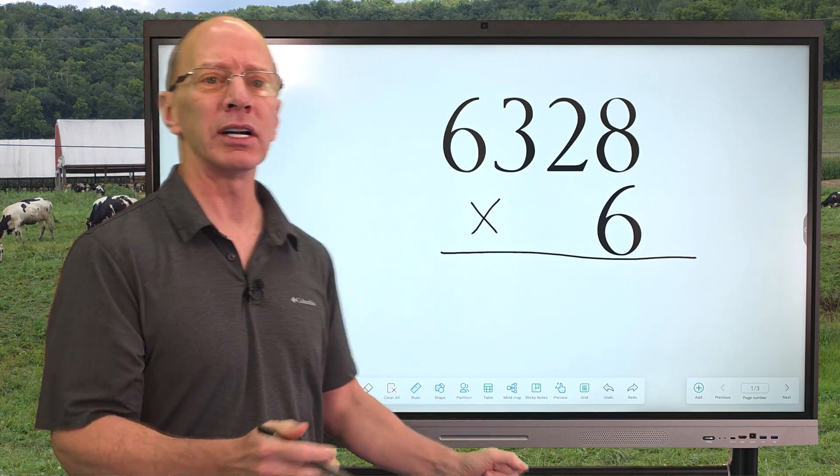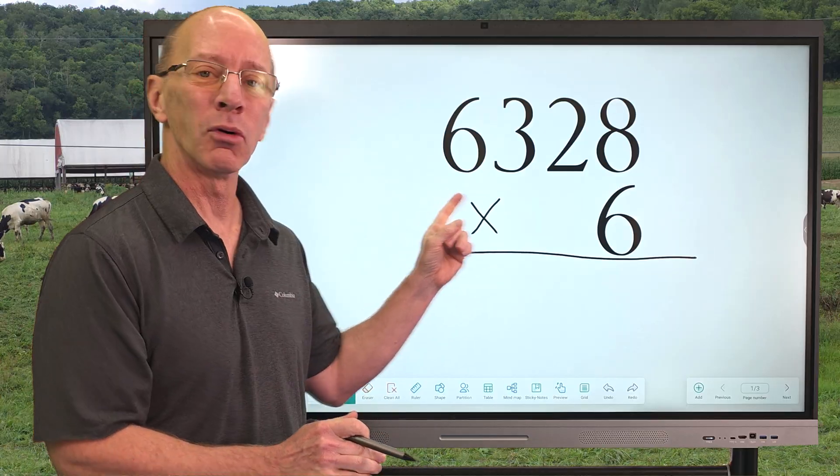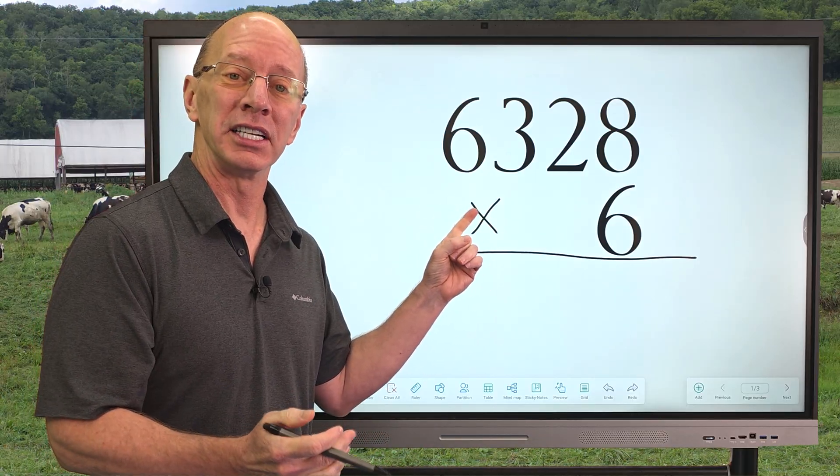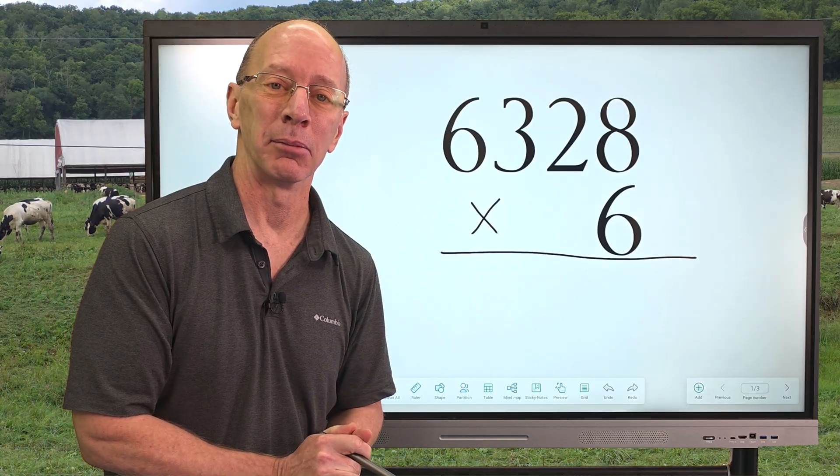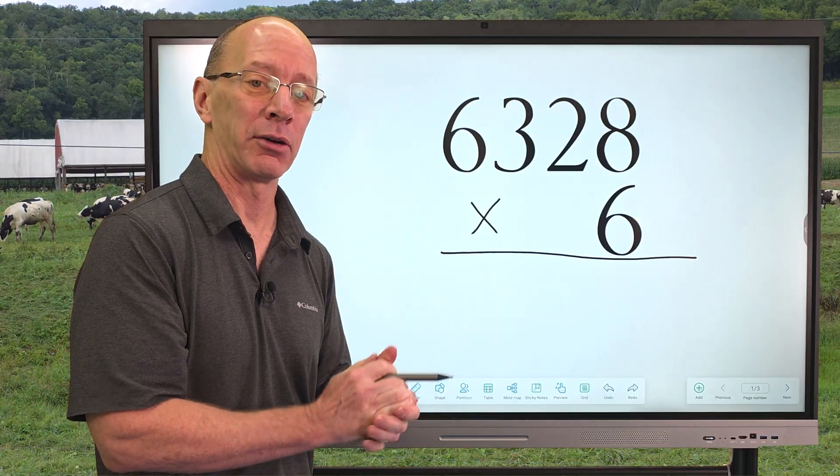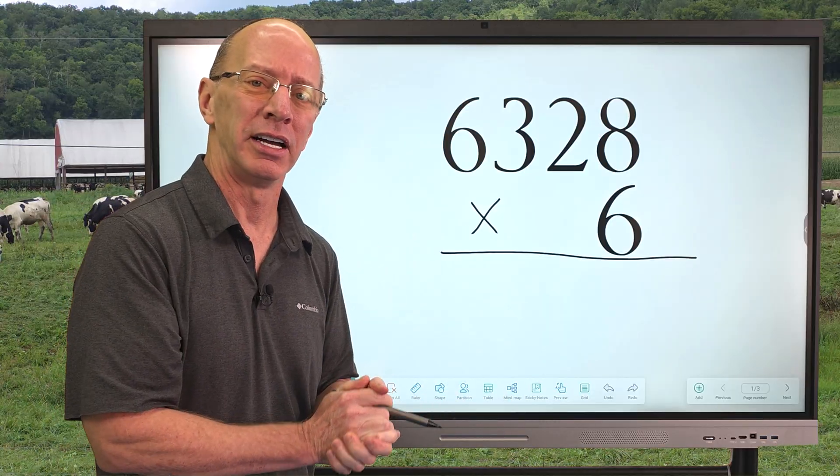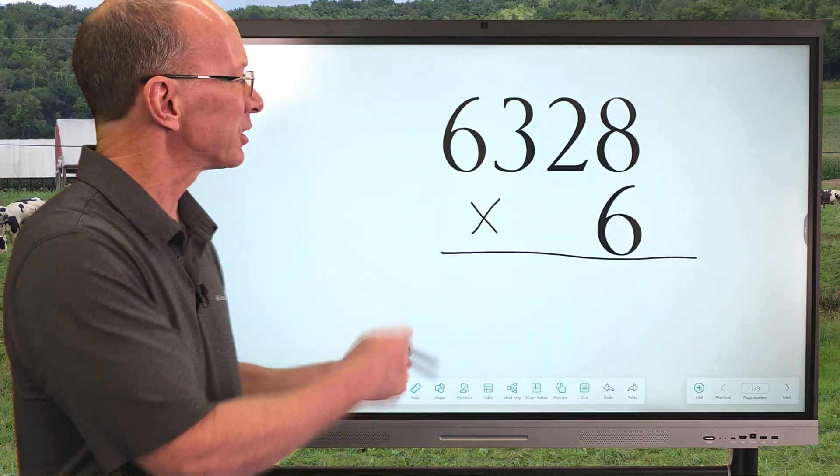Wow, there are a lot of cows around here. Hey, thanks for joining the show today. Today we're working on multiplication, a four-digit number times a one-digit number. I have three problems set up just like this, so if you want to go ahead and write some of these problems on a paper, you can always pause and play the video and then check it with me. Alright, let's go ahead and get started.